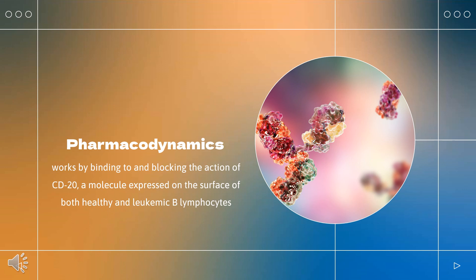Pharmacodynamics: Ofatumumab works by binding to and blocking the action of CD20, a molecule expressed on the surface of both healthy and leukemic B lymphocytes. In patients with previously untreated CLL, ofatumumab caused B-cell depletion in the peripheral blood after 6 months following the last dose. However, observable depletion of B-cells in the peripheral blood does not directly correlate with the depletion of B-cells in solid organs or malignant tumors. In vitro, ofatumumab induces complement-dependent cytotoxicity (CDC) and antibody-dependent cytotoxicity (ADCC).